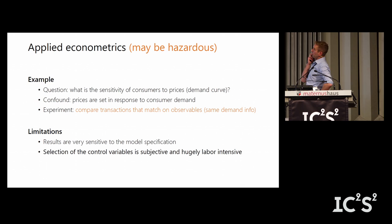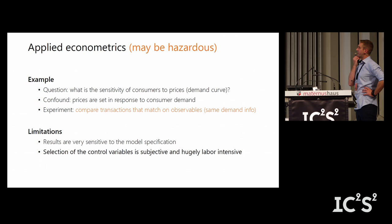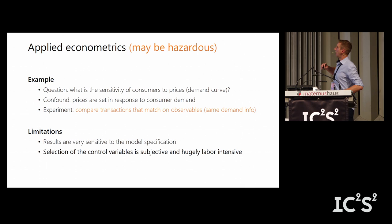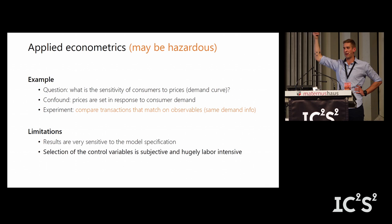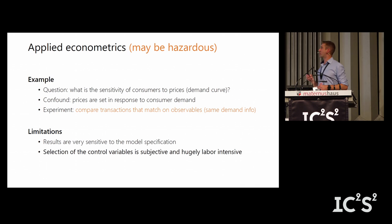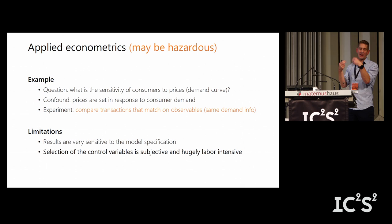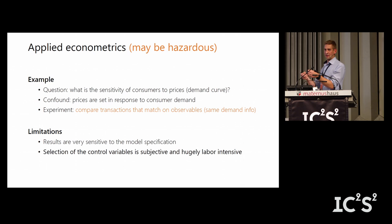Probably the most common type of applied econometrics — the 'hazardous' one — is where you have no experiment but a bunch of observable variables you can control for. This is standard stats 101: throw controls into your regression. For example, if you want to know consumer price sensitivity, the problem is prices are set in response to demand — hotels are expensive at Christmas and sold out, not the other way around. The idea is to compare transactions that match on observables: same day of year, same type of hotel, except the prices were randomly different. This is the matching or propensity score style.